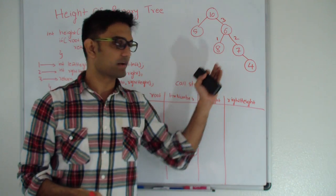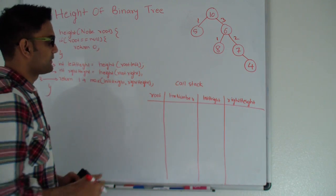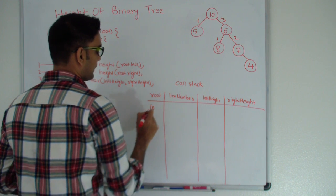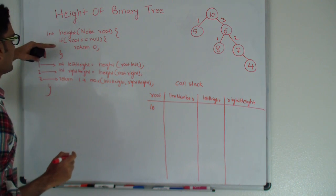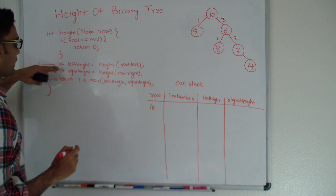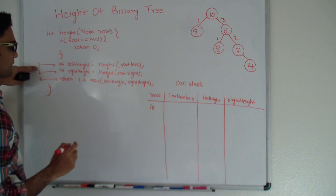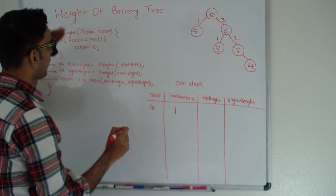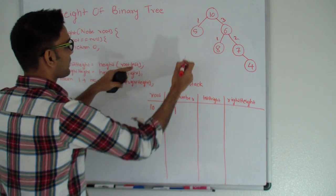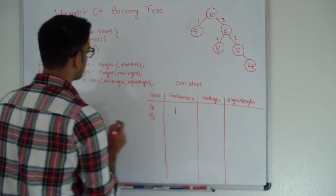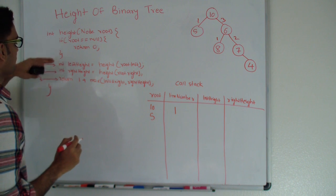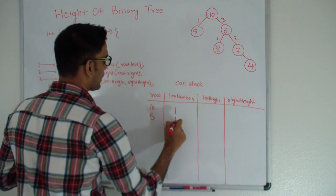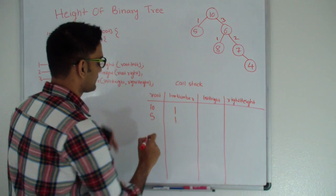Let's simulate this in a call stack and see how this works. My root is 10 initially, and then I go into the recursion from line number 1 and call height again with root.left which is 5.